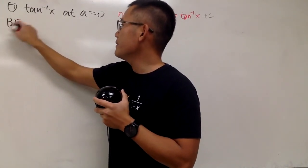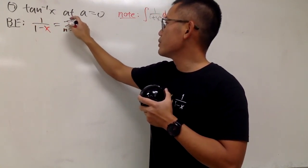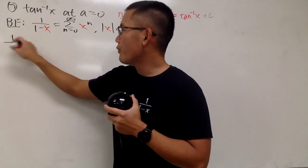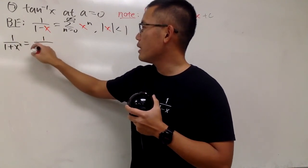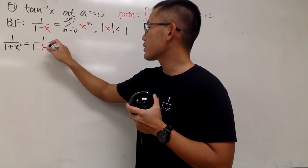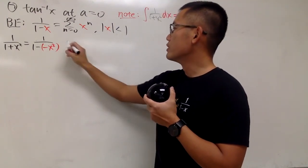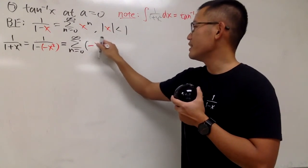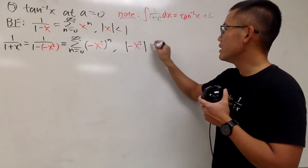I'll just write down the best friend again. 1 over 1 minus x — this is the sum as n goes from 0 to infinity of x to the nth power, with absolute value of x less than 1. Now, 1 over 1 plus x squared is the same as 1 over 1 minus negative x squared. So we have the sum as n goes from 0 to infinity of negative x squared to the nth power, where the absolute value of negative x squared is less than 1.